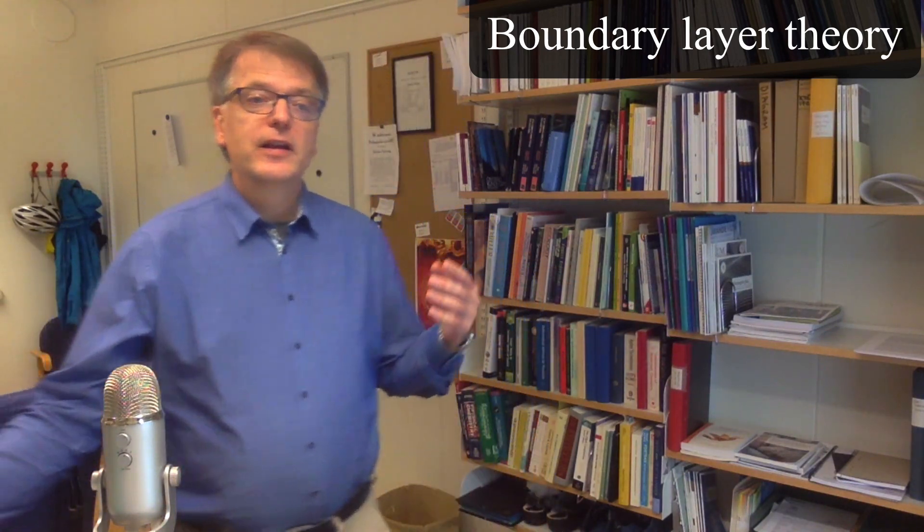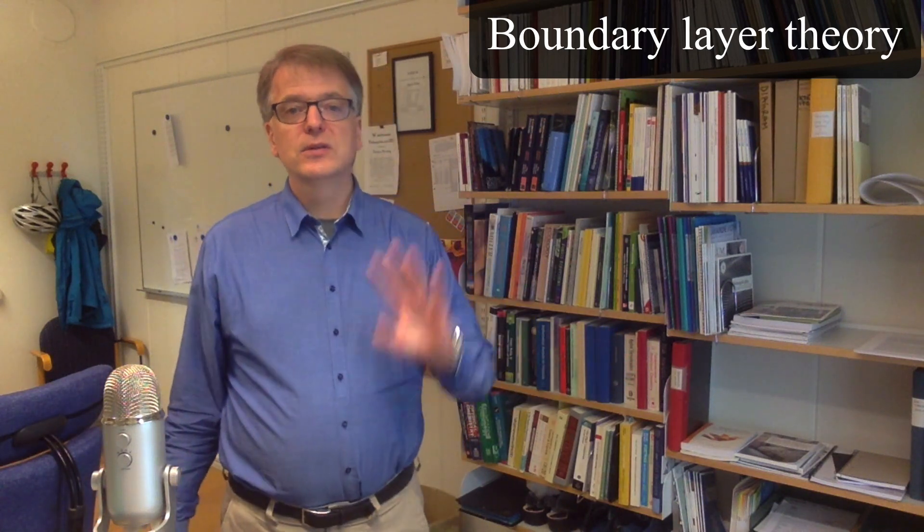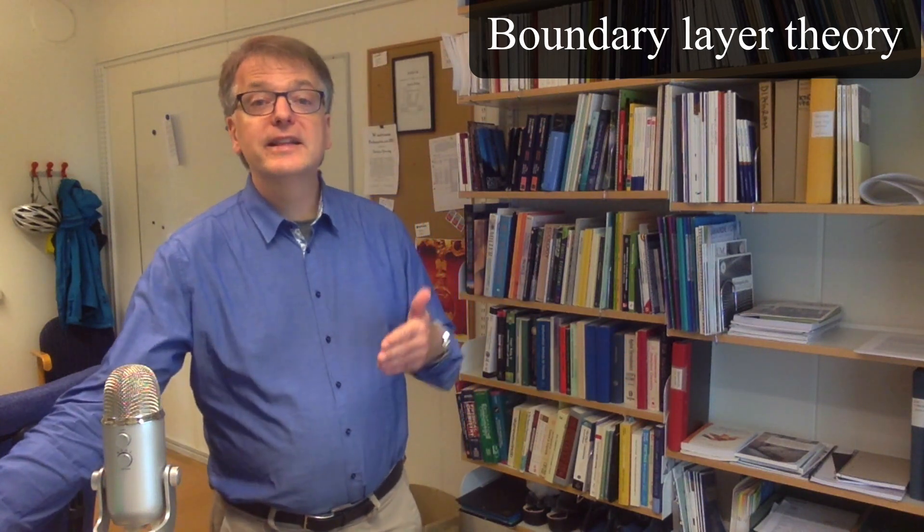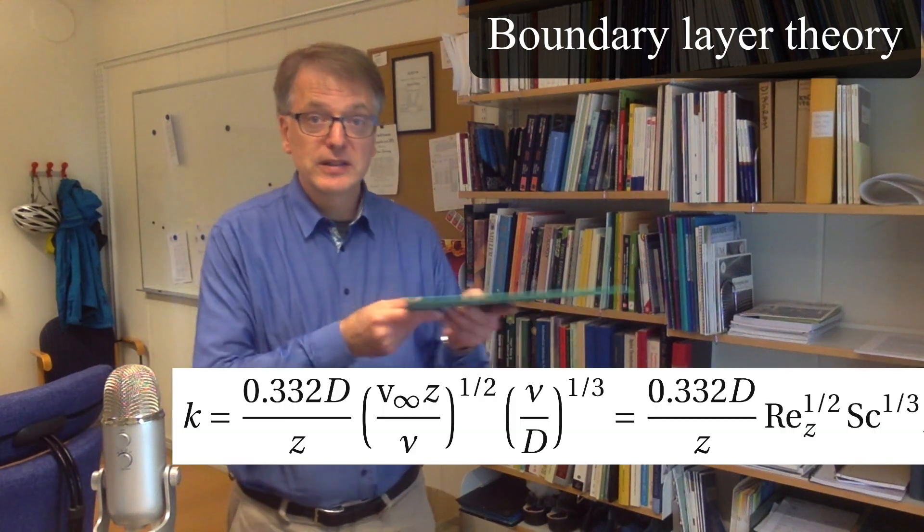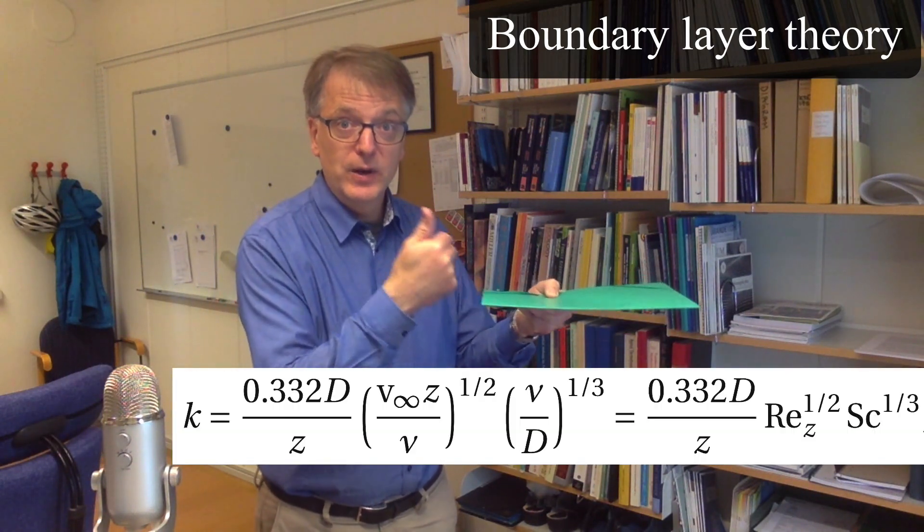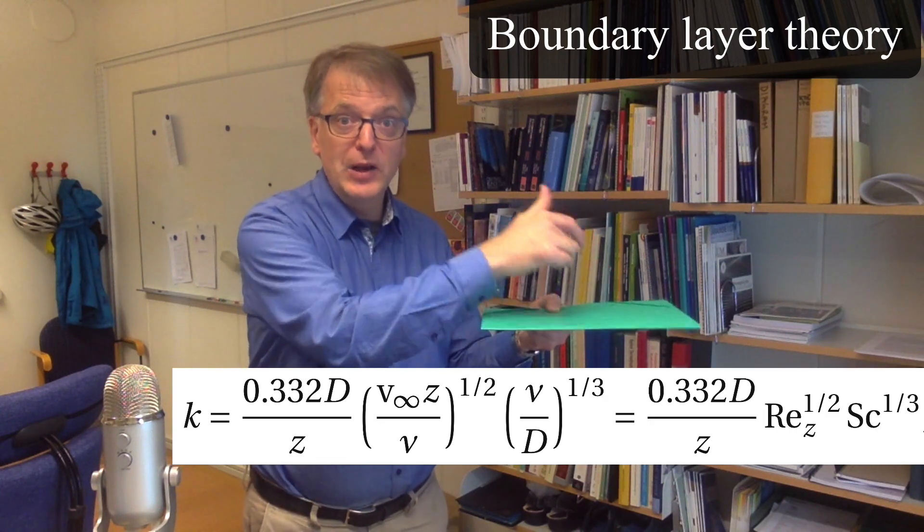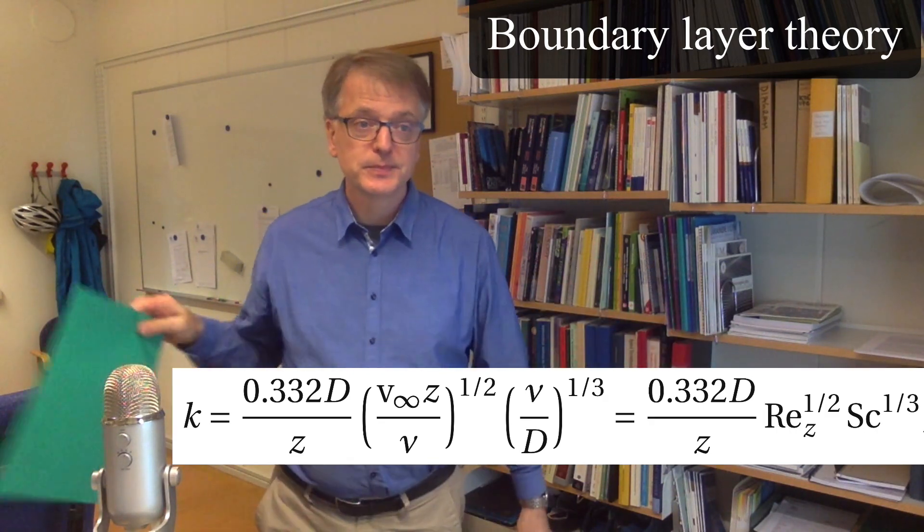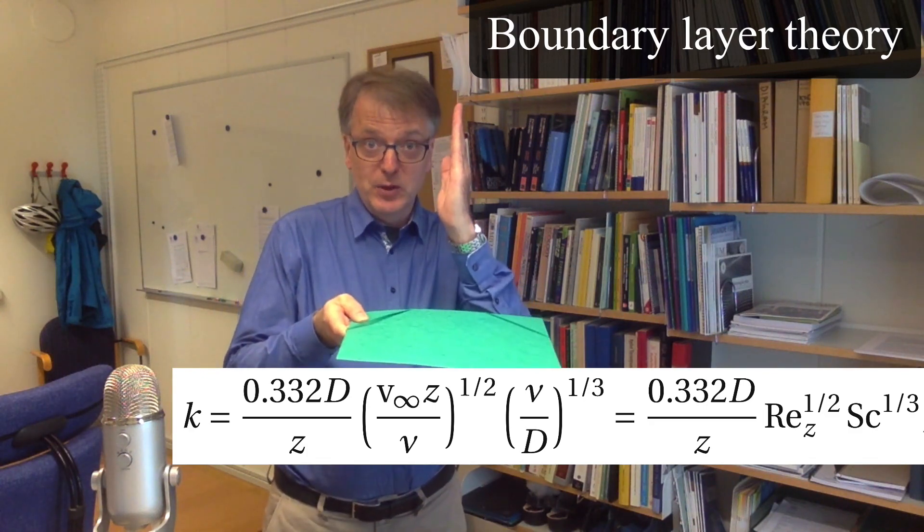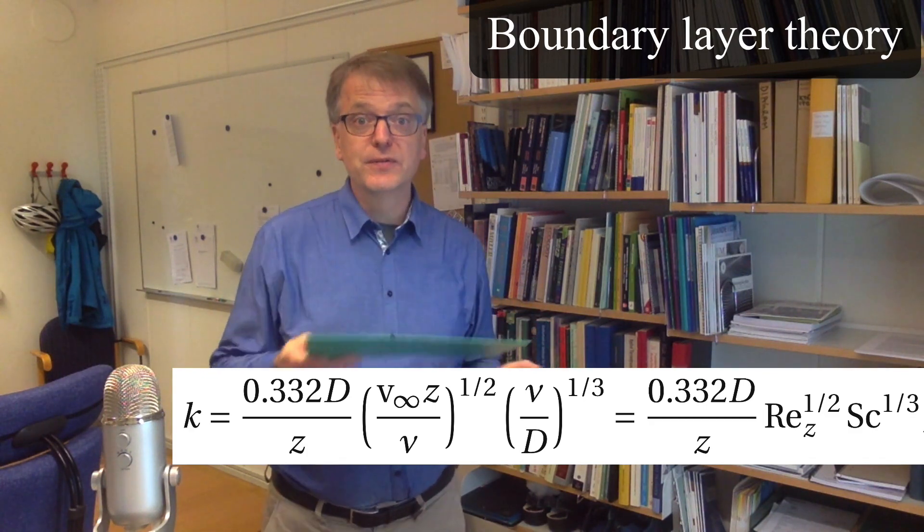So the mass transfer coefficient is related to the diffusivity and the distance. So the distance from here, where the air hits or the liquid or whatever, and where we look at this surface. And the mass transfer rate we're talking about is diagonal to the surface, right.